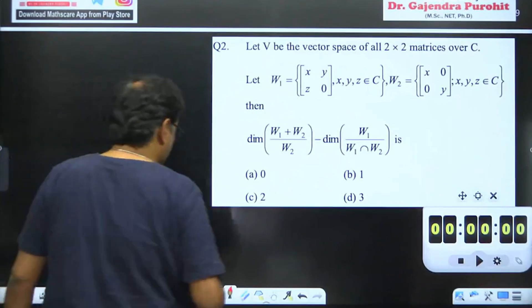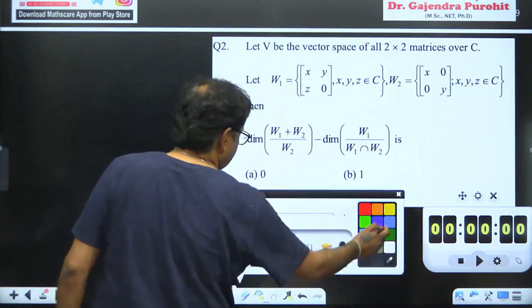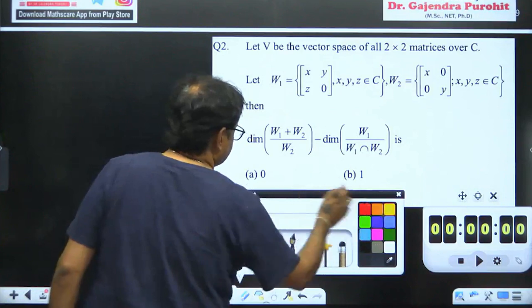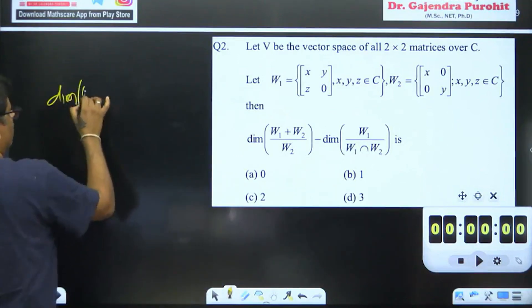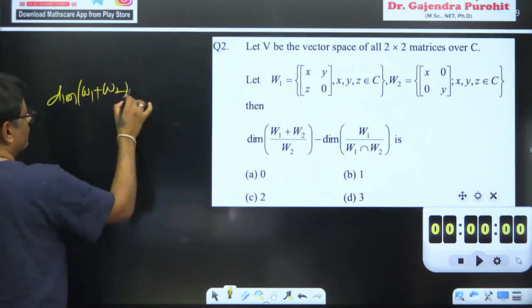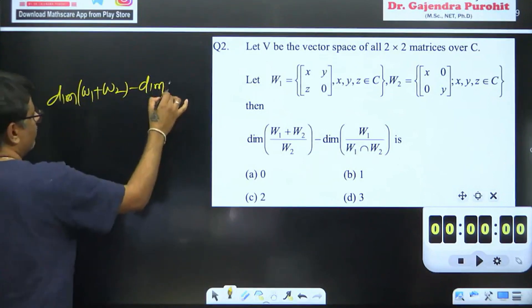If you have any concept of the spectrum, you have to remember a formula here. Dimension of w1 plus w2 upon minus dimension of w2.